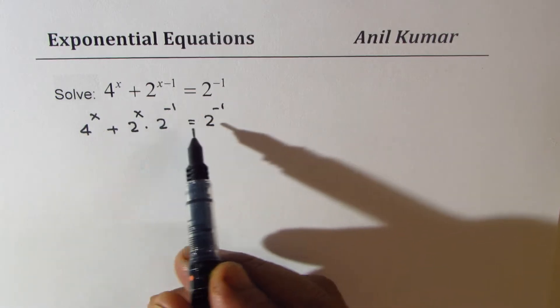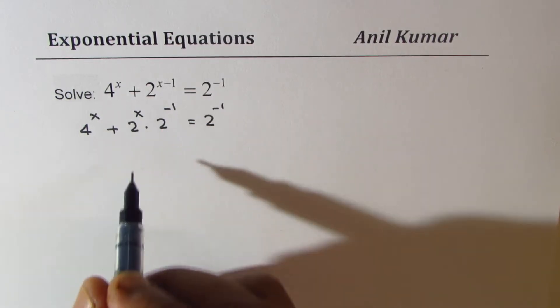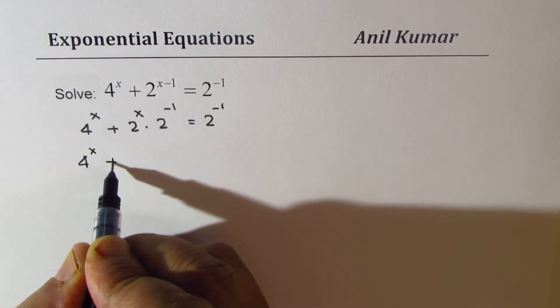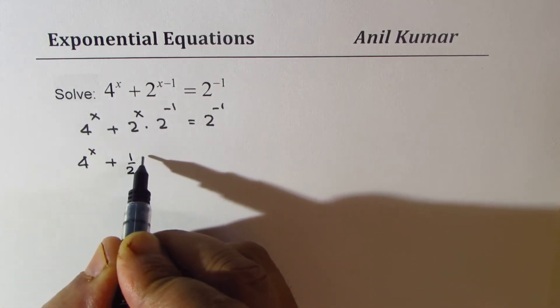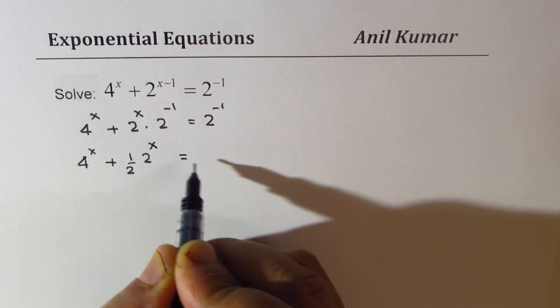Now, minus 1 really means half, 1 over 2. So let's rewrite this as 4 to the power of x plus half of 2 to the power of x equals half.